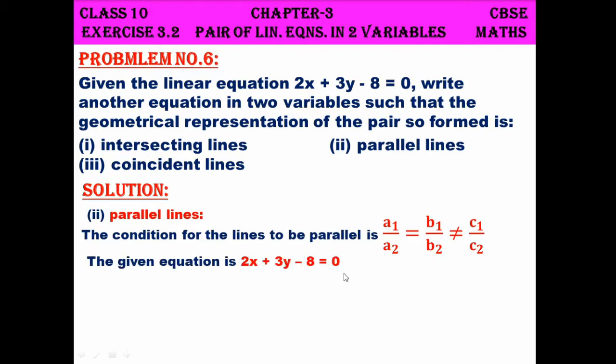The given straight line is 2x plus 3y minus 8 equals 0. So now what we are going to do is the first two ratios should be equal. So let me multiply the x coefficient and y coefficient by a common number and you should not do that for the constant. So that this ratio alone will be equal. The constant will not be equal.